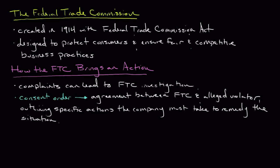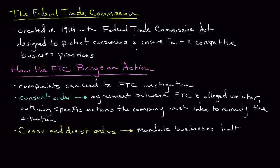The alleged violator has the ability to accept or reject the consent order, which can lead to the FTC filing for a cease and desist order. A cease and desist order mandates that the business halts the identified unfair practice. If approved by a judge, the alleged violator has no choice but to comply, or face penalties that can be particularly costly — both in terms of reputation and monetary penalties for the company.